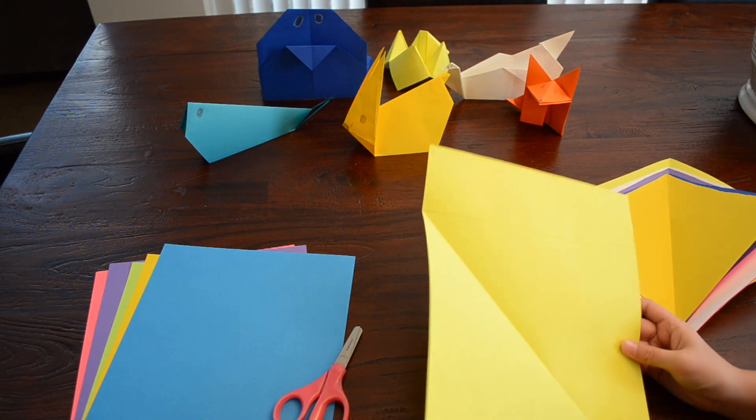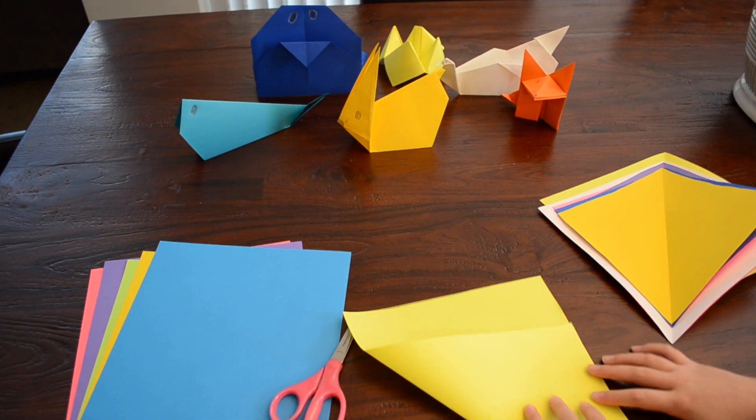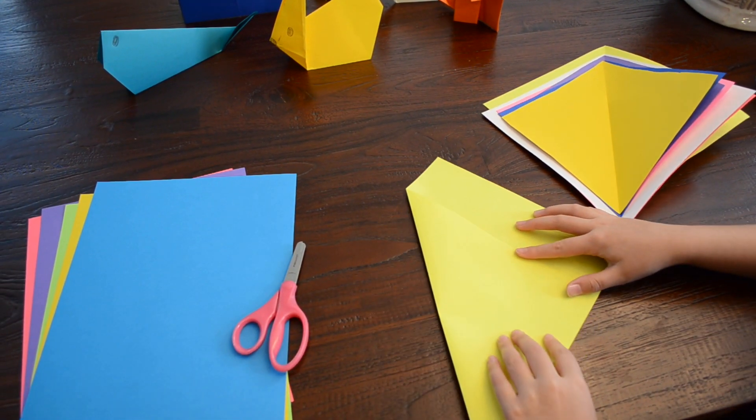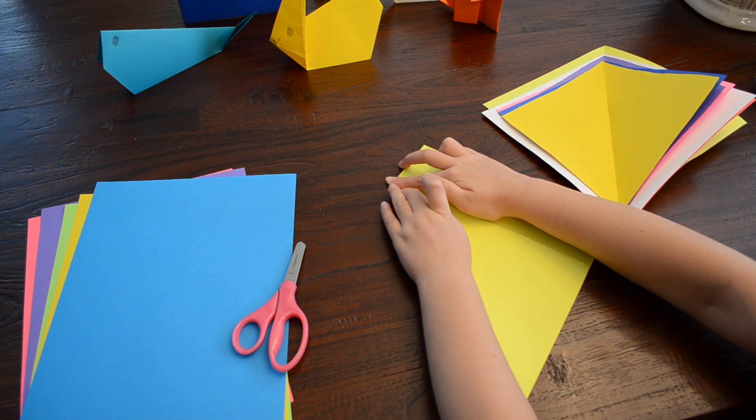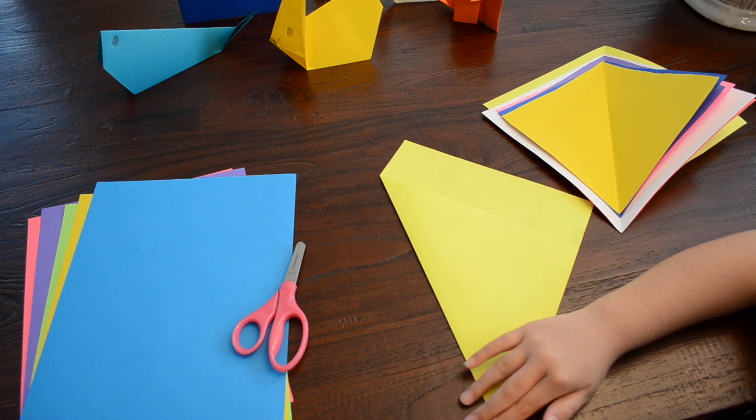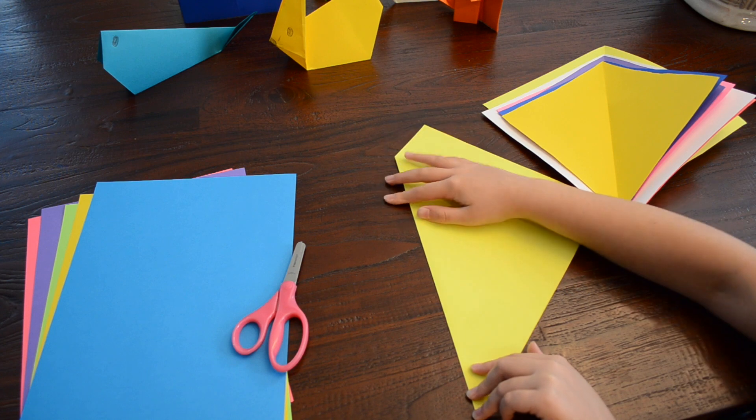So first, you get your piece and you flip it over on its side, and you have to make sure that the crease is lined up to the bottom. Then you have to crease it really tight, otherwise it won't stay and it'll just make the whole thing ruined. And so if you need any help, you can ask an adult to get it nice and tight.